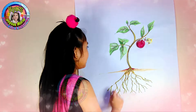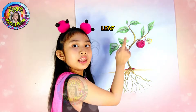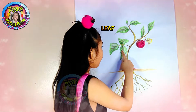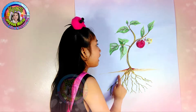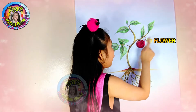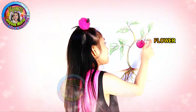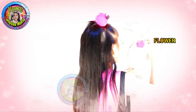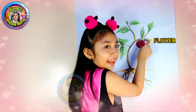This is the leaves. Green leaves make food for the plants. This is the flower. The flower makes the seeds to produce new plants.